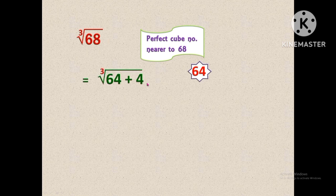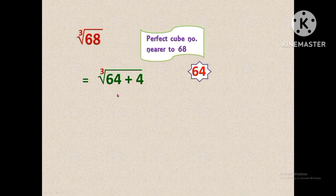We are going to rewrite the number 68 as 64 plus 4, because 64 plus 4 is equal to 68. The 64 is none other than the perfect cube number which is nearer to 68. After that, we are going to find the cubic root for the number 64. Since 64 is a perfect cube number, the cubic root is simply 4.